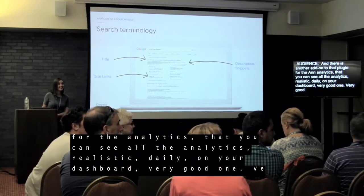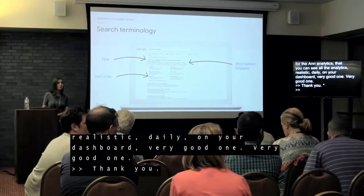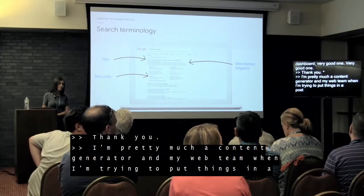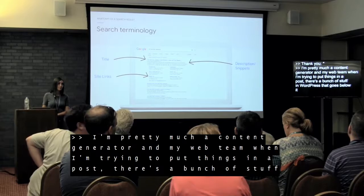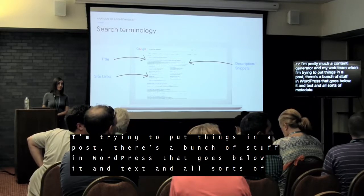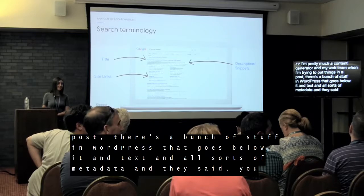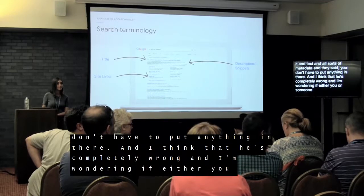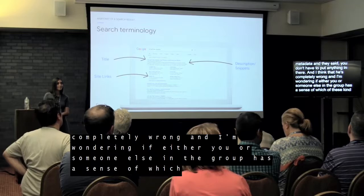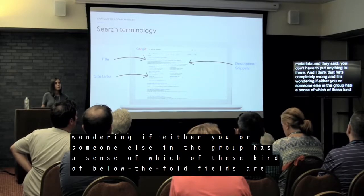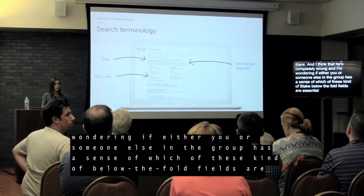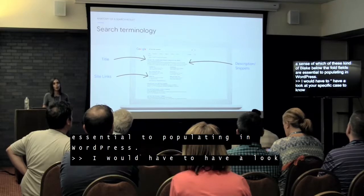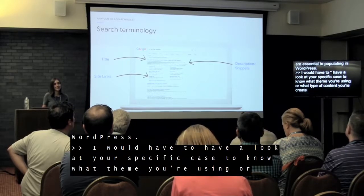Question from a content generator: there are fields in WordPress below posts — like alt text and other metadata — that their web team says don't need to be filled in. Is that correct? I would need to see your specific case and what type of content you're creating to give a definitive answer. And for the Yoast plugin — it's spelled Y-O-S-T.